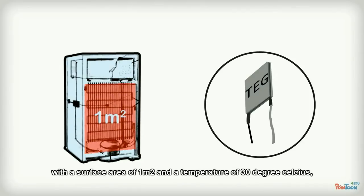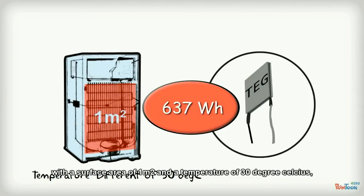When applying TEG on a fridge with a surface area of one square meter and a temperature of 30 degrees Celsius, around 637 watt-hours of energy can be produced by harvesting the waste heat.